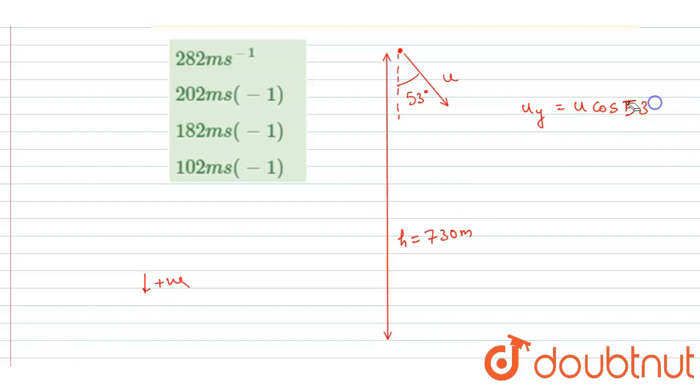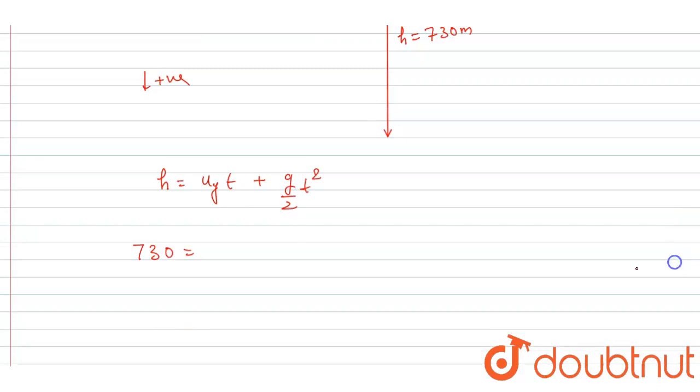3 by 5. Now put the value. g is 10, so half g will be 5.